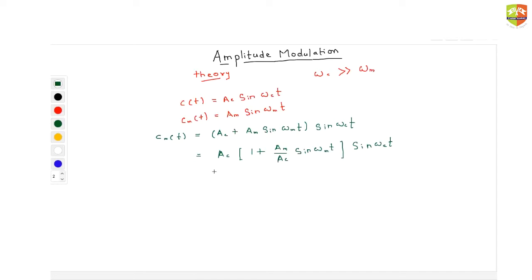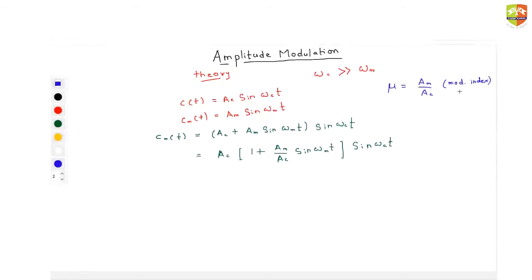There is a term called modulation index, denoted as mu, defined as A_m divided by A_c. Since we are defining everything with respect to variation in amplitude, amplitude has special importance. If the carrier wave amplitude is very large, the fluctuation in amplitude due to the message signal becomes very small. That is why the ratio A_m / A_c is a meaningful physical quantity called modulation index.